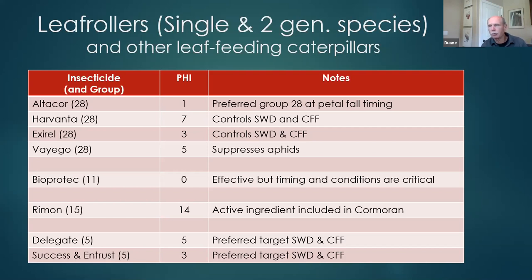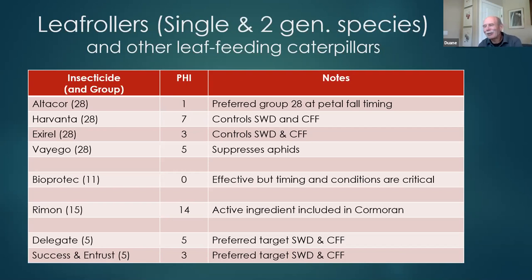It's worth monitoring for leaf rollers at this time of year to see if there's adequate pressure to warrant a spray. There are four Group 28 products now: Altacore and Xrel have been around a few years, Harvanta came last year, and now a new Group 28 product called Viego. We've relied more heavily on Altacore as a leaf roller material at petal fall spray because it doesn't have a use really later in the season for cherry fruit fly and SWD.